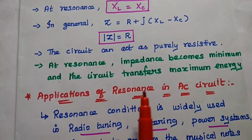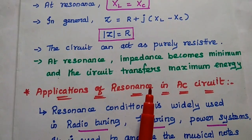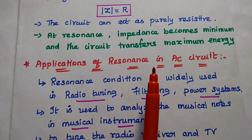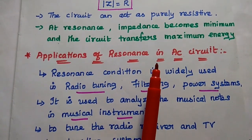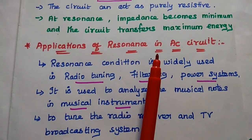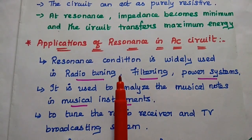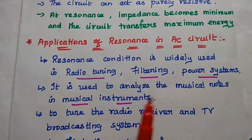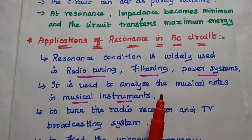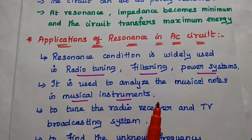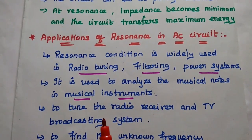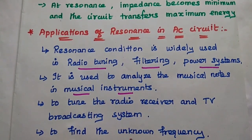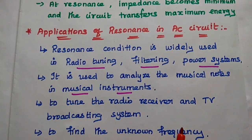At resonance condition, we can get the maximum energy without any distortion. This concept is widely used in radio receiver and radio tuning circuits. Resonance in AC circuits is widely used in radio tuning, filtering, and power transfer systems. It is also used to analyze musical notes in musical instruments — to increase the volume of musical notes — and to tune radio receivers and TV broadcasting systems. It is also used to find unknown frequencies with reference to the resonant frequency.